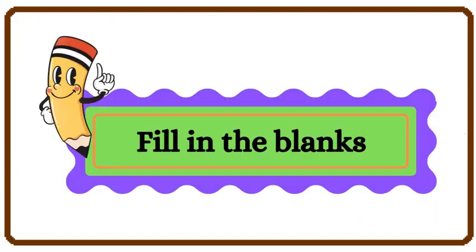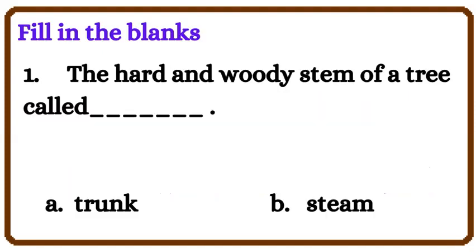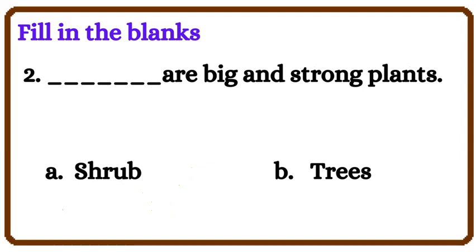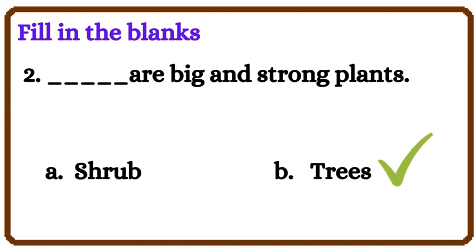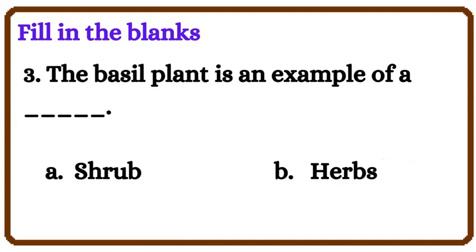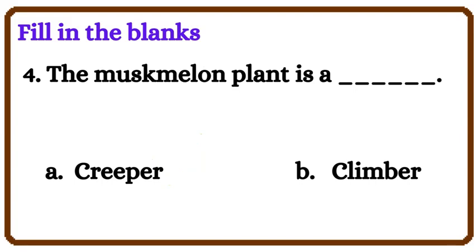Fill in the blanks. The hard and woody stem of a tree is called Trunk. Trees are big and strong plants. The basil plant is an example of a Shrub. The musk melon plant is a Creeper.